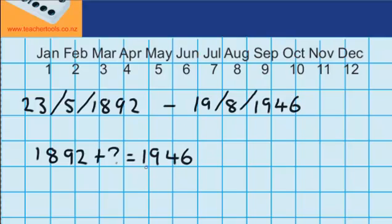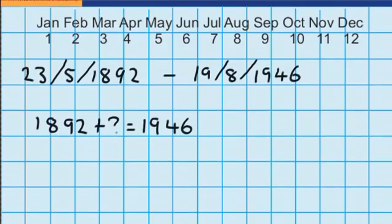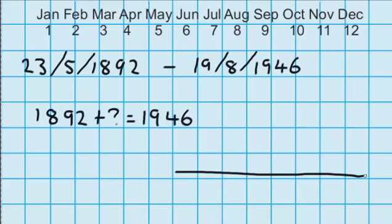Notice I'm saying these like 1946 rather than nineteen forty-six just because they're dates. But they are the same thing. So let's start by drawing a number line. On my number line I'm going to write 1946, the date I'm trying to get to, and I'm going to write 1892.